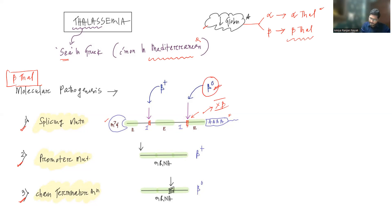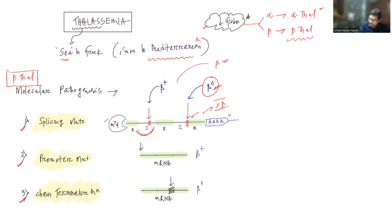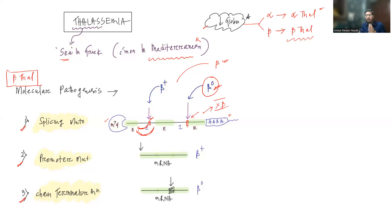The second scenario is when the mutation is inside the intron. Sometimes normal splicing can happen, removing the entire intron and producing some normal beta globin. But sometimes the mutated site will act as a cryptic splice site — the spliceosome detects the mutated area as an intron-exon junction and causes splicing from there, producing abnormal mRNA. So both normal and abnormal splicing are possible when the mutation is inside the intron.